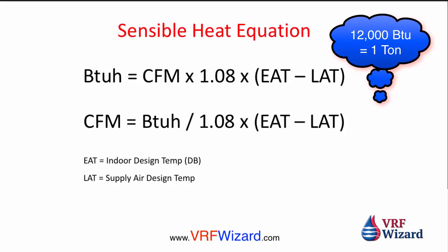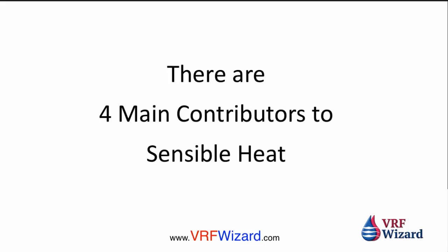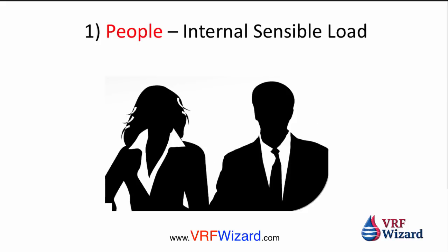Indoor design we're going to use 75°F and leaving air temperature we're going to use 55°F. Sensible heat is a change in temperature — it has nothing to do with moisture; that would be latent heat. We're covering sensible heat and how to figure out CFM for the room. There are four main contributors to sensible heat, the first being people — people give off heat and depending on the activity level, the amount of heat they give off changes.